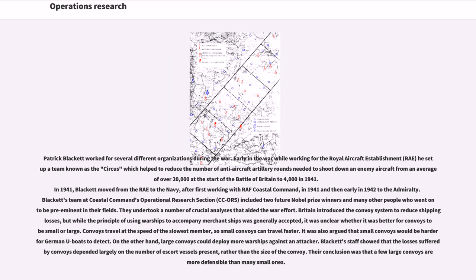In 1941, Blackett moved from the RAF to the Navy, after first working with RAF Coastal Command in 1941 and then early in 1942 to the Admiralty. Blackett's team at Coastal Command's operational research section included two future Nobel Prize winners and many other people who went on to be preeminent in their fields. They undertook a number of crucial analyses that aided the war effort.